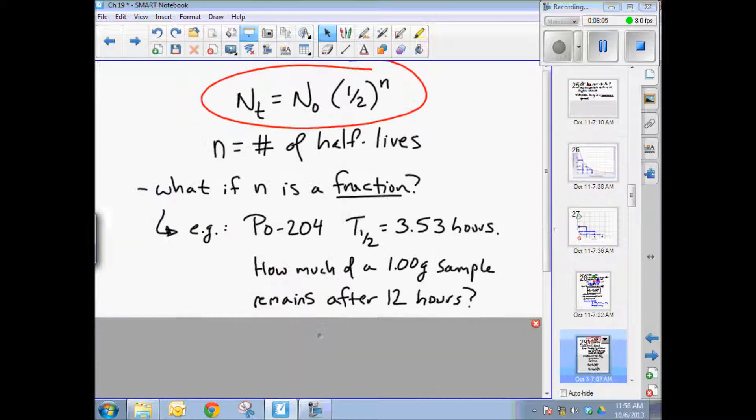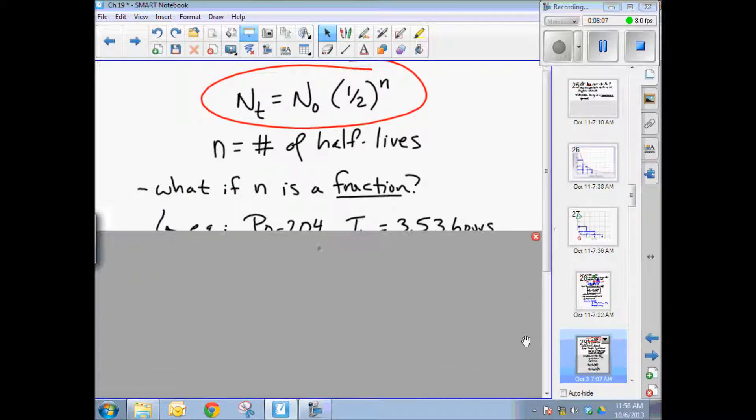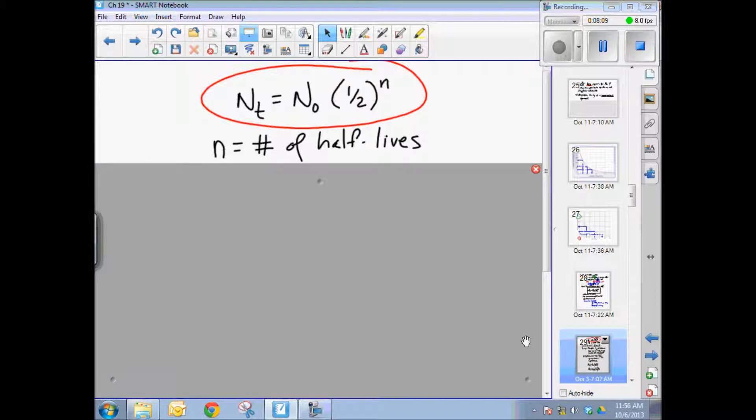So this is a pretty important formula right here. N sub t, the amount remaining at some later time is equal to the original amount times one half to the exponent n, where n is equal to the number of half lives that we've gone through.